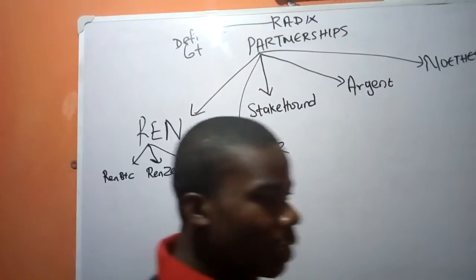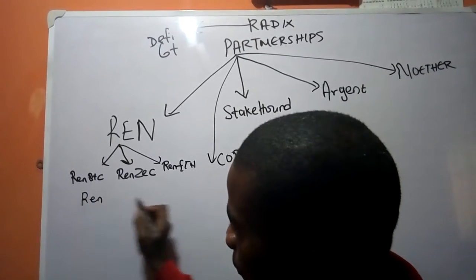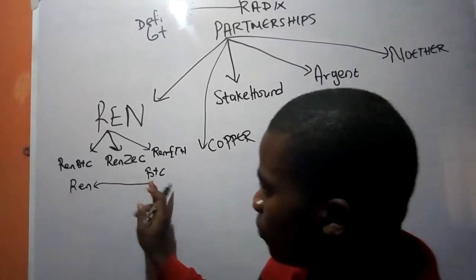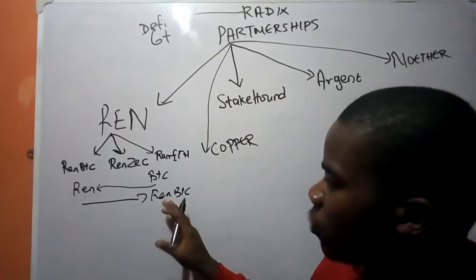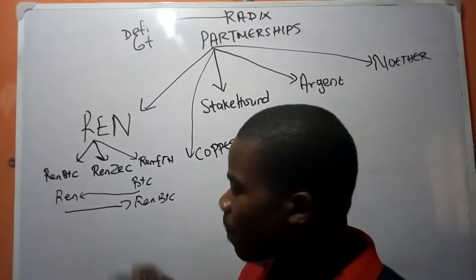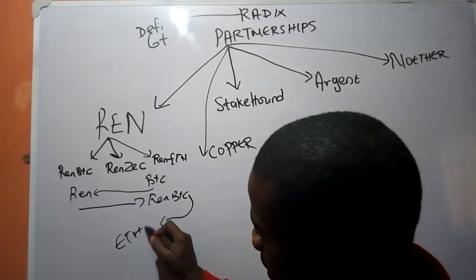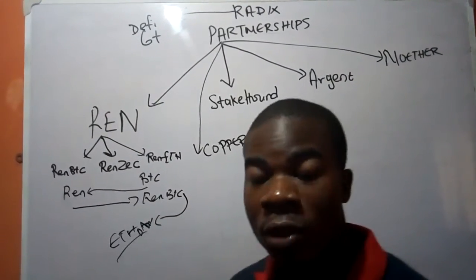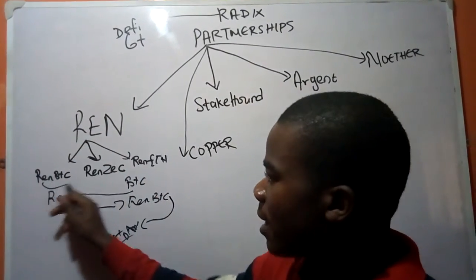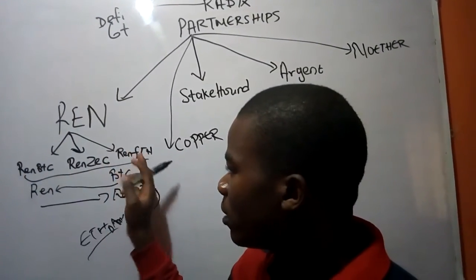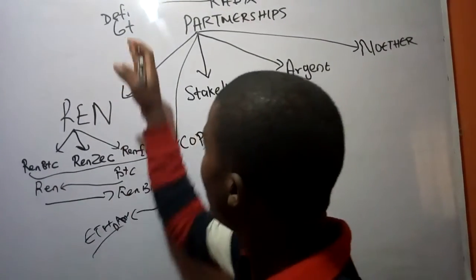With Rain BTC, there is a one-to-one conversion ratio. Once you send your BTC to the Rain platform, it is locked, and then they issue you Rain BTC. This Rain BTC is a BTC that is compliant with the Ethereum standard, and you can put it into Ethereum DApps to do things like borrowing. The reason RIDIS is partnering with Rain is to bring assets like this, because there are a lot of people who hold BTC, Ethereum, and Zcash, and bringing them over will transition liquidity to the platform.